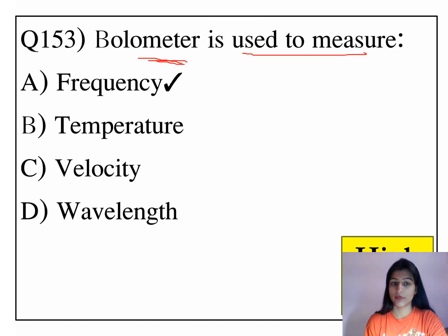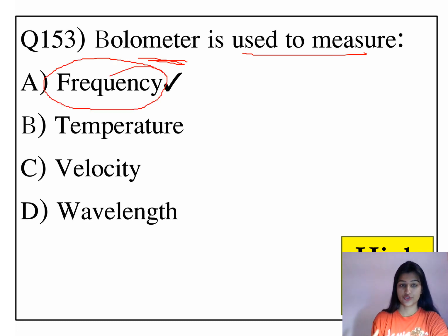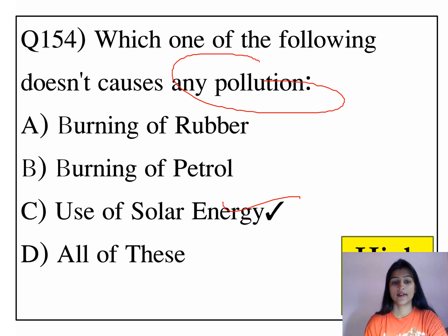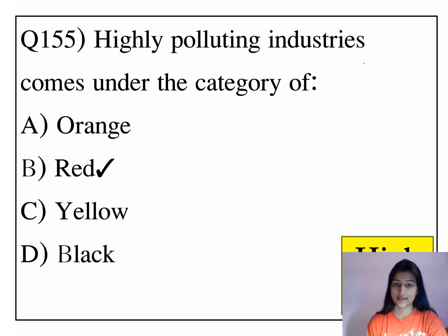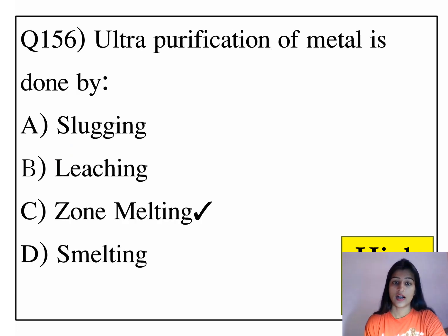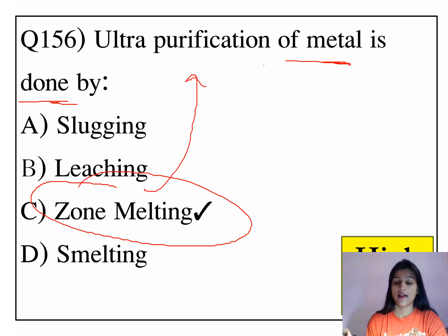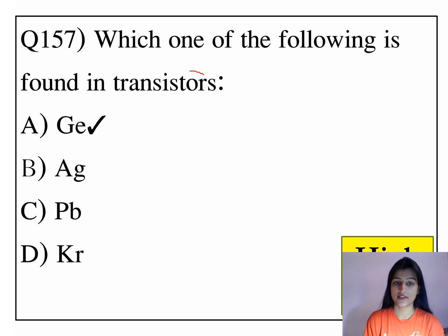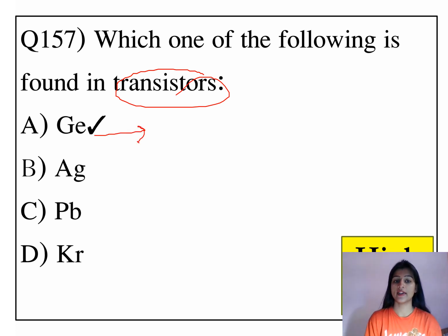A barometer is used to measure frequency. Which one of the following doesn't cause any pollution? The use of solar energy doesn't produce any pollution. Highly polluting industries come under the category of red. Ultra-purification of metal is done by zone melting. Which one of the following is found in transistors? Germanium is found in transistors.